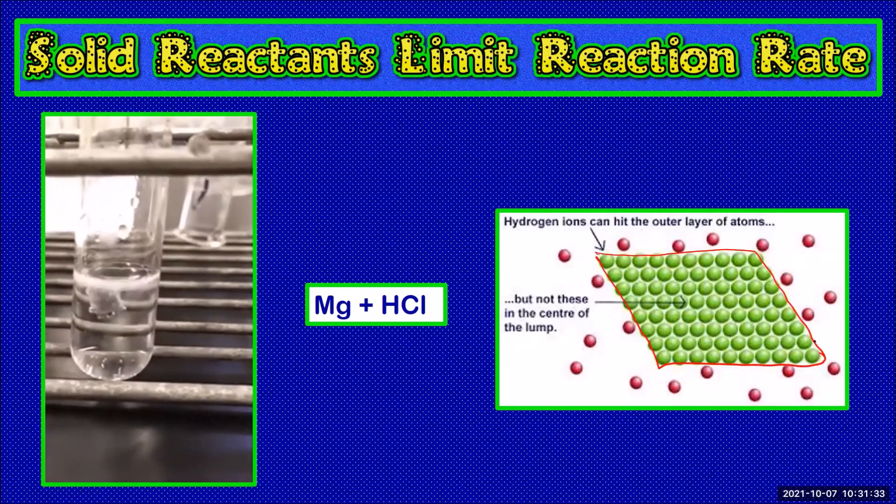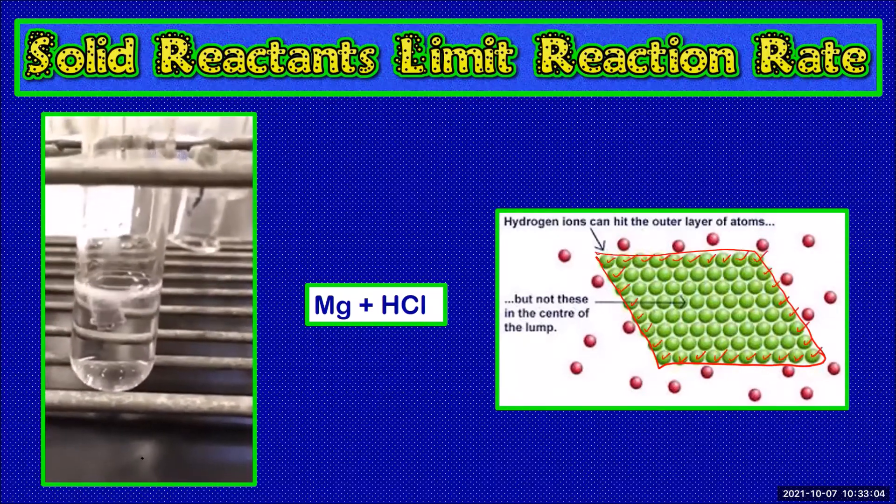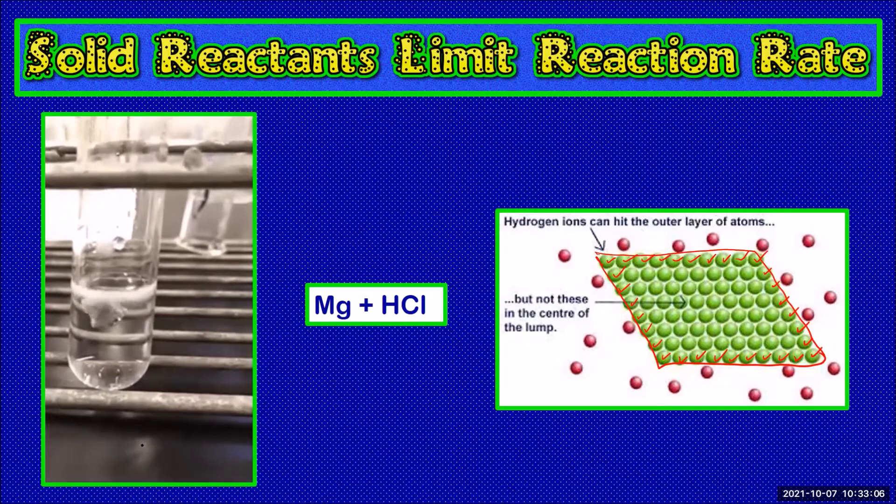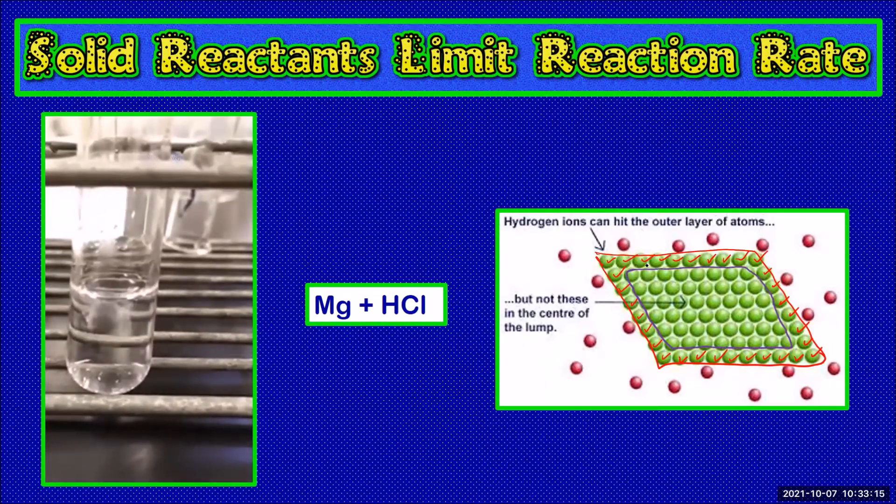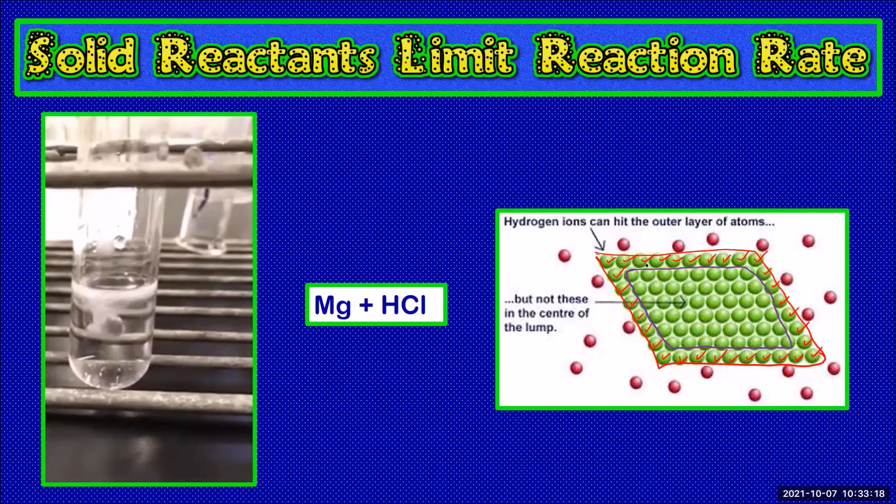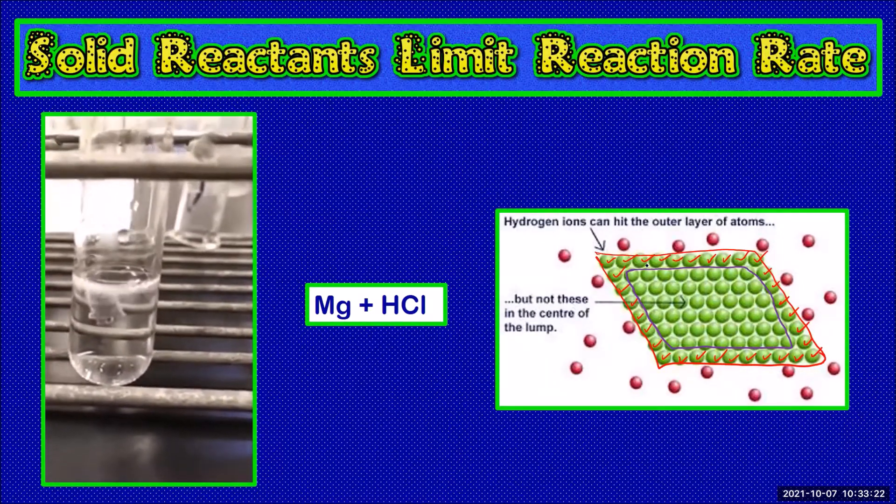The acid can only collide with the atoms on the very surface of the lump. The atoms of magnesium in the center of the lump can't actually access the acid. The number of collisions between reactants is being limited so the reaction rate is limited.